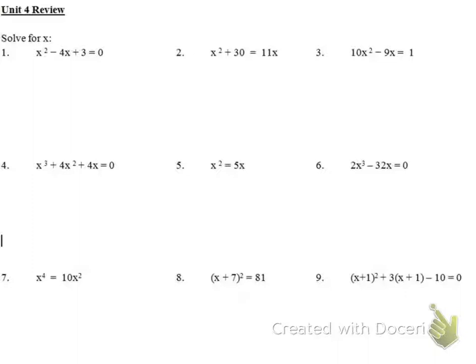For number one, x squared minus 4x plus 3. I'm looking for a product of 3 that adds to negative 4. I get x minus 3, x minus 1. That's still equal to zero. So I set each of them equal to zero: x minus 3 equals zero, x minus 1 equals zero, and I get x equals 3 and x equals 1. So my solution would be x equals 1 and 3.